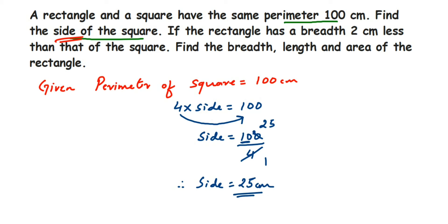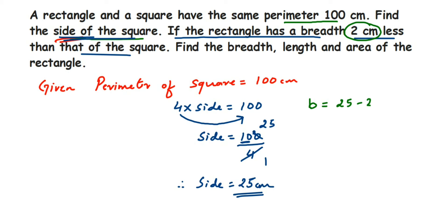Using the side, we're going to find out the breadth. We found the side of the square. Next, the rectangle has a breadth two centimeters less than the side of the square. The side is 25, so breadth equals 25 minus 2, which gives breadth equal to 23 centimeters.